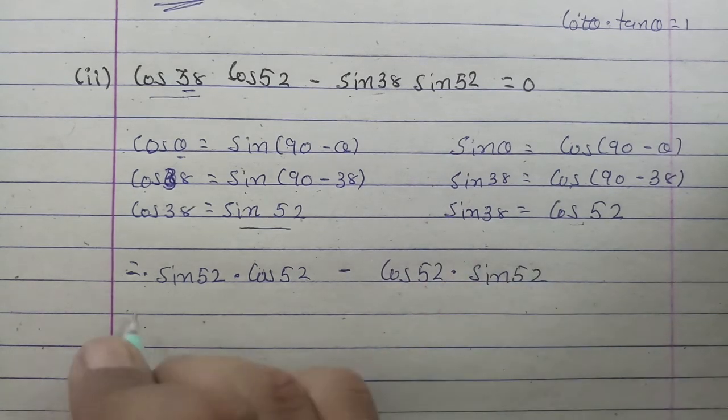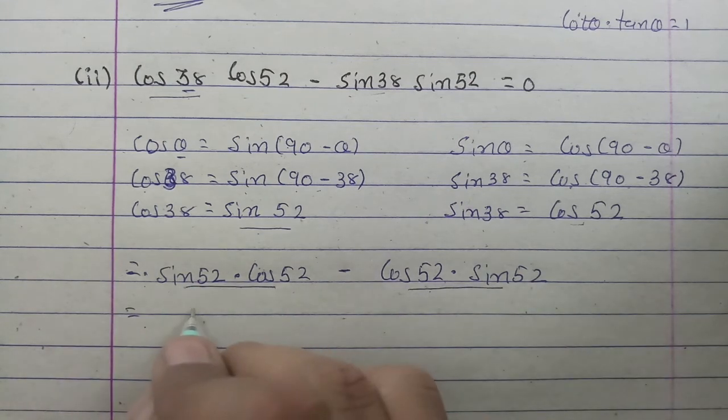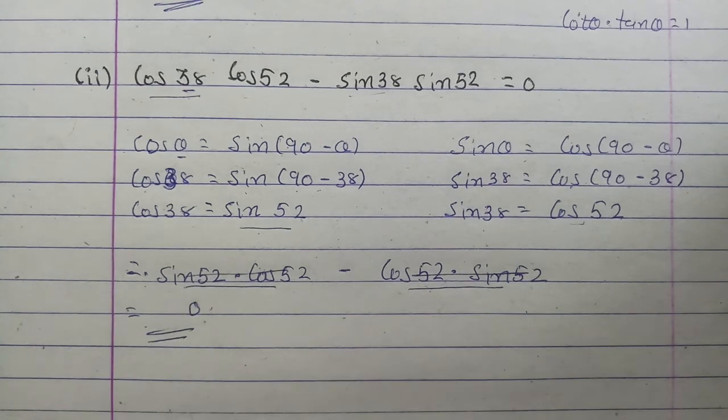So sin times cos, and also cos times sin. The angles are the same, so this and this will get cancelled and the answer will be 0. Clear.